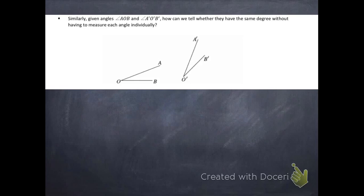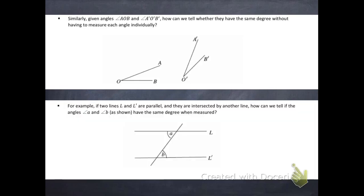And then lastly, here's another slightly more complicated diagram. If two lines L and L' are parallel, and they're intersected by another line, how can we tell if the angles, angle A and angle B, have the same degree when measured? So once again, we don't want to measure them directly, but we want to construct a proof that would tell us whether those angles are the same or not.